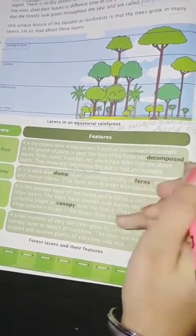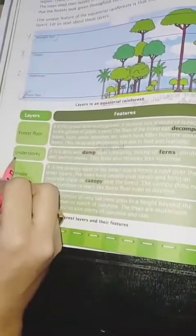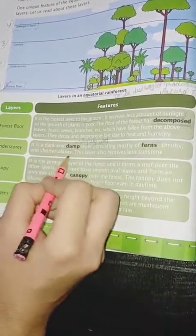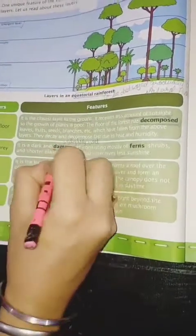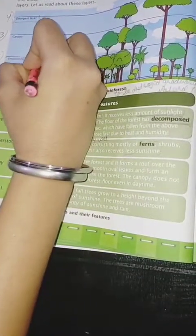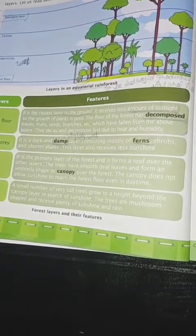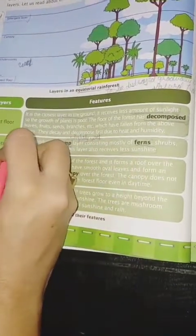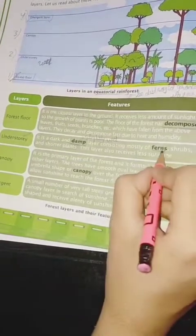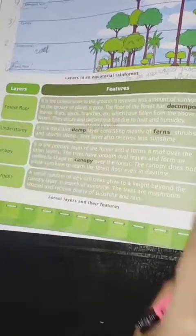The next layer is the understory. What is understory? It is a dark and damp layer consisting mostly of ferns, shrubs, and short plants. Damp means slightly wet — this layer is slightly wet with a watery effect. Ferns are plants of large delicate leaves with no flowers. The plants which grow in the understory don't have flowers; they are mainly of different types of leaves. These plants are quite short, like the trees seen here that come under the understory.